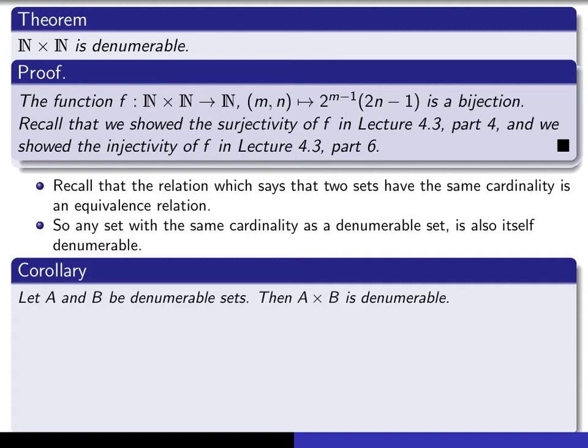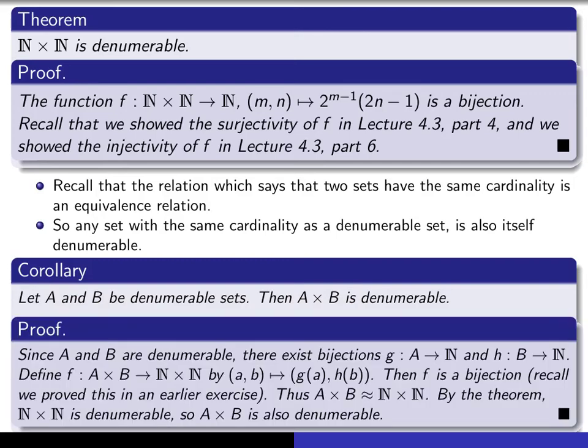So that enables us to prove this corollary, that if you give yourself any two denumerable sets, not just n, but any two, the Cartesian product is necessarily denumerable. The proof of that is also something that we've already done, really. If a and b are assumed to be denumerable, then we know that there exist bijections.